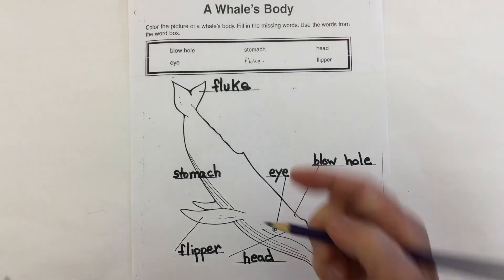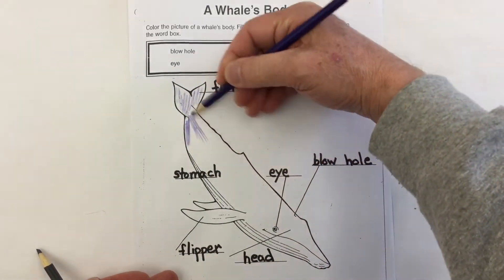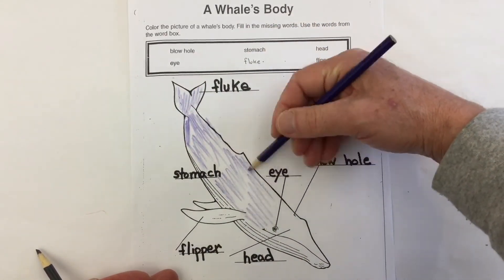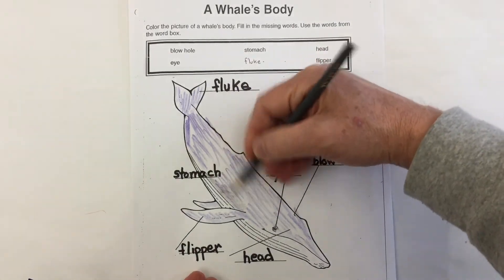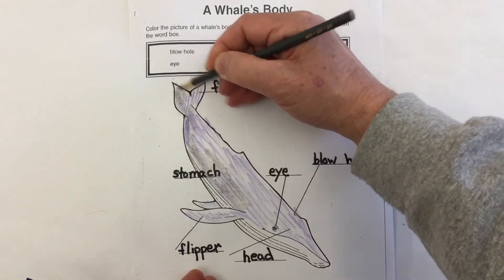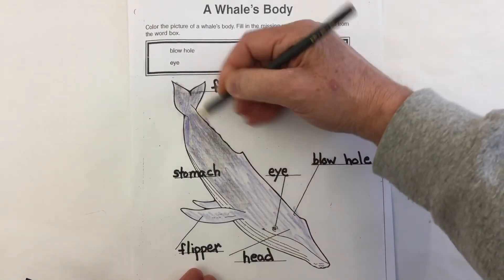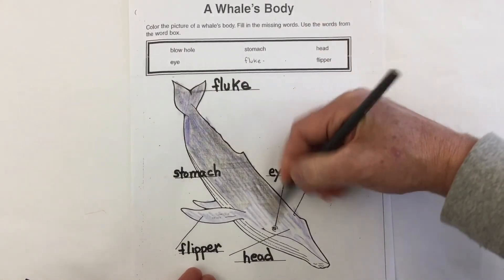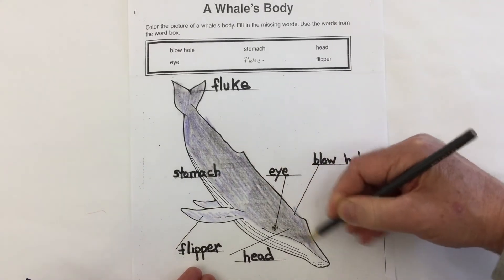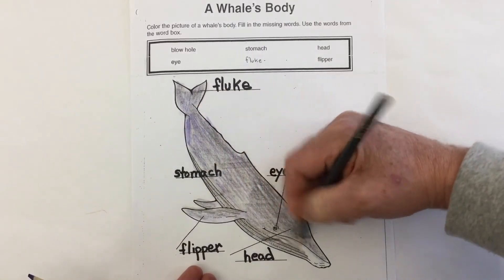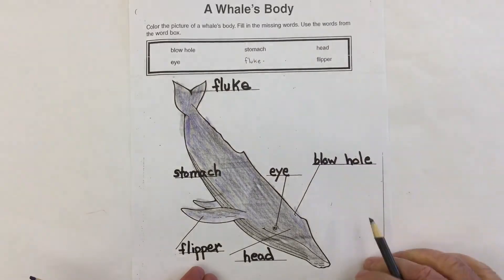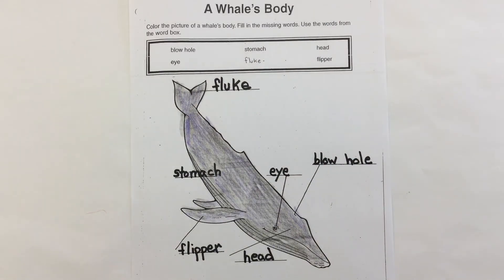Let's add some color to our whale. And there we go — I colored in our whale. Notice I sort of blended a grey and a darkish purpley blue together. I believe this might be a humpback whale.